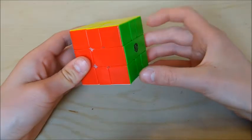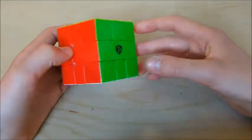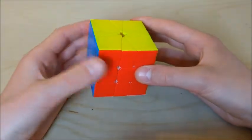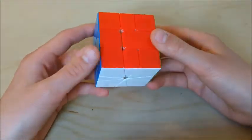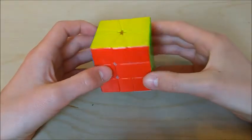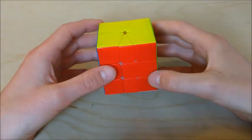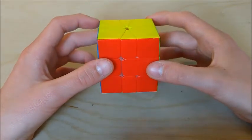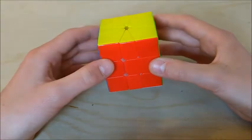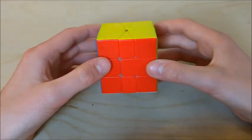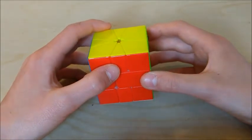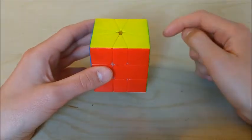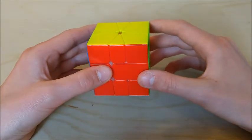Hey guys, today I have some example solves on the Square-1. I use an X-Man Volt Square-1 as my main, and it's what I'll be using in this video as well. I average in the 12 second range with the Lin method. I do know some CSP cases, but I won't be using CSP in these example solves because there are a few things I'd like to give tips on when it comes to parity cases, so I want to try to get those. All the scrambles will be down in the description, so if you want to follow along, check those out.